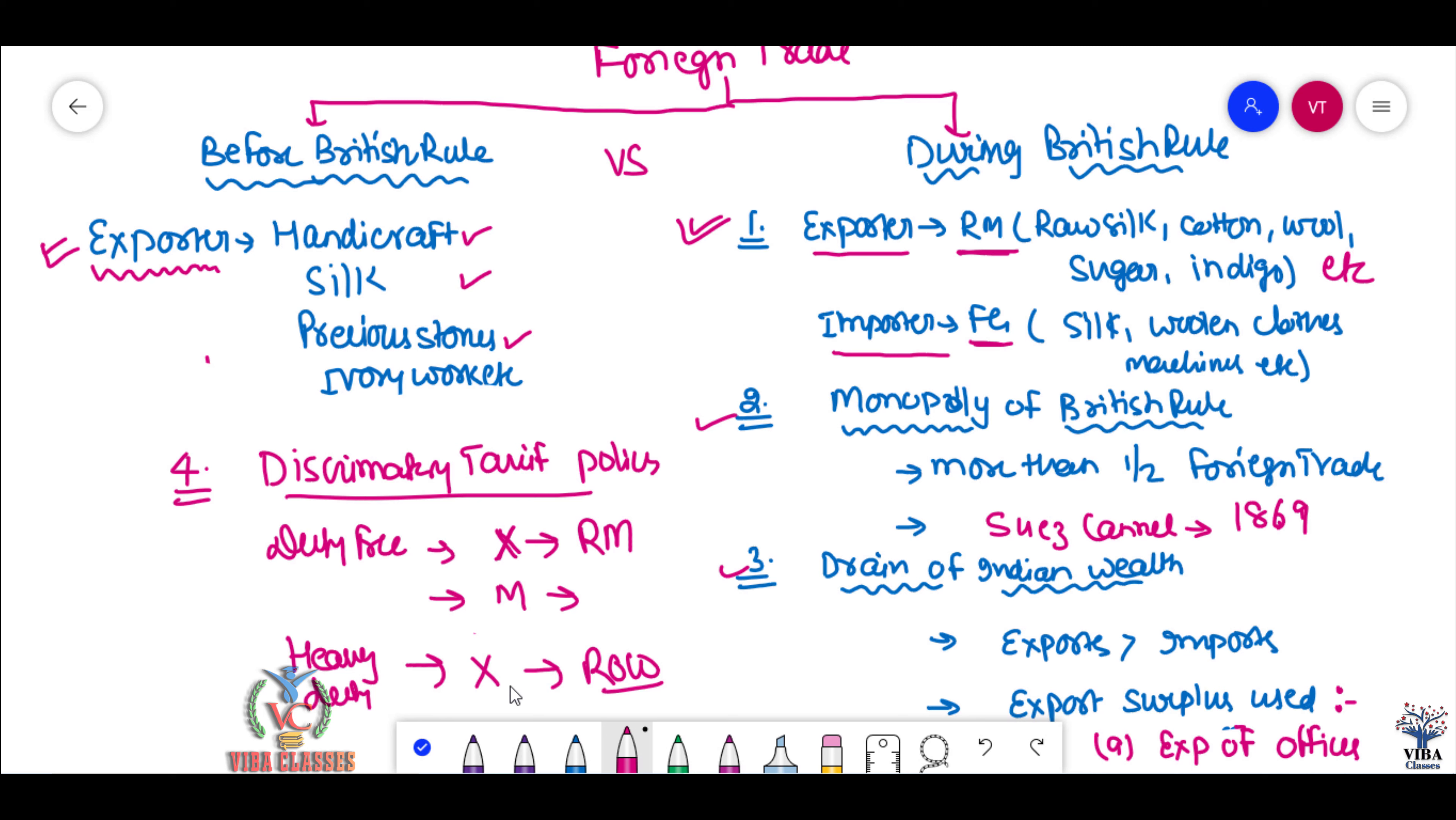If we tried to export, they imposed so much tax that it became very expensive in that country. So they would export to us, and they would impose so much taxes on our exports that for that country it became very expensive. So they cleverly started exporting their own goods instead of ours. This way they controlled our export and import. More than half of our foreign trade was with Britain. It was a monopoly on export and import.